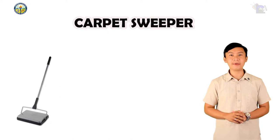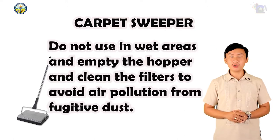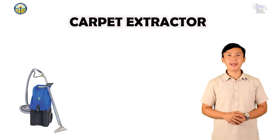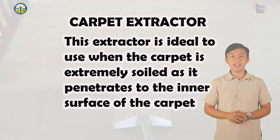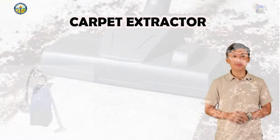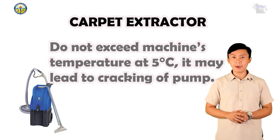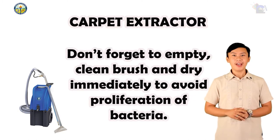Number 3: Carpet Sweeper. It is vacuum-like, used to pick up dirt and particles from the carpet in a quick and easy operation. Do not use in wet areas; empty the hopper and clean the filters to avoid air pollution from fugitive dust. Number 4: Carpet Extractor. This extractor is ideal to use when the carpet is extremely soiled, as it penetrates to the inner surface of the carpet and extracts embedded soil or dirt. Do not exceed the machine's temperature at 5 degrees Celsius — it may lead to cracking of the pump. Don't forget to empty, clean the brush, and dry immediately to avoid proliferation of bacteria.